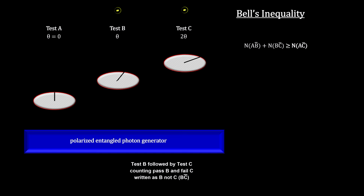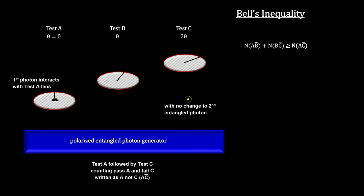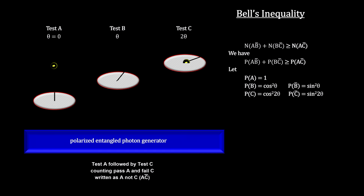Being a thought experiment, we cannot actually run the tests and count the results. But we can use the quantum state probabilities to compute the results for these three numbers.